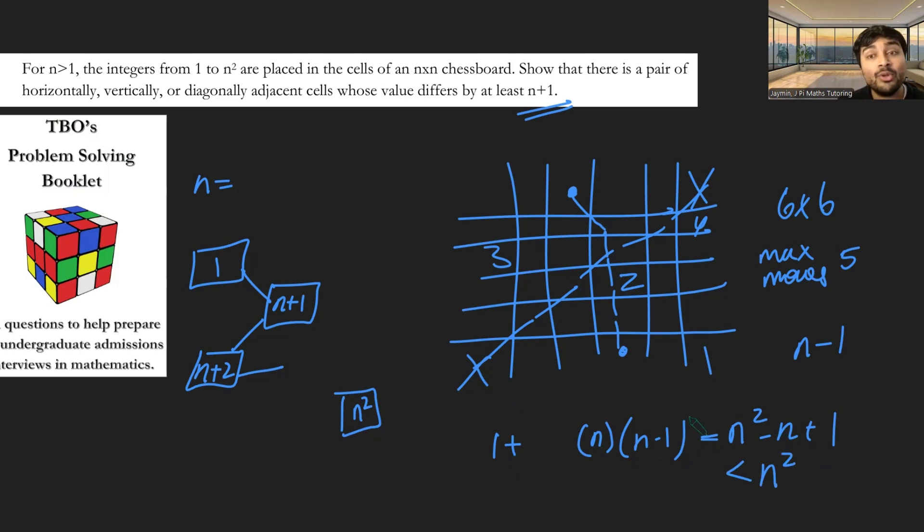And so therefore, I will not be able to get from the square with 1 in it to n squared. And so this is a contradiction. And so therefore, one of these jumps in my jumping process must have been at least n plus 1. And that gives us the result that we want.